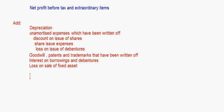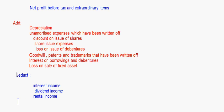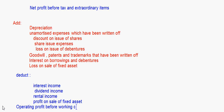Now let's see what items are to be deducted. You have interest income, dividend income, any income received in the form of interest or dividend, rental income, and profit on sale of fixed assets — these are all to be subtracted.